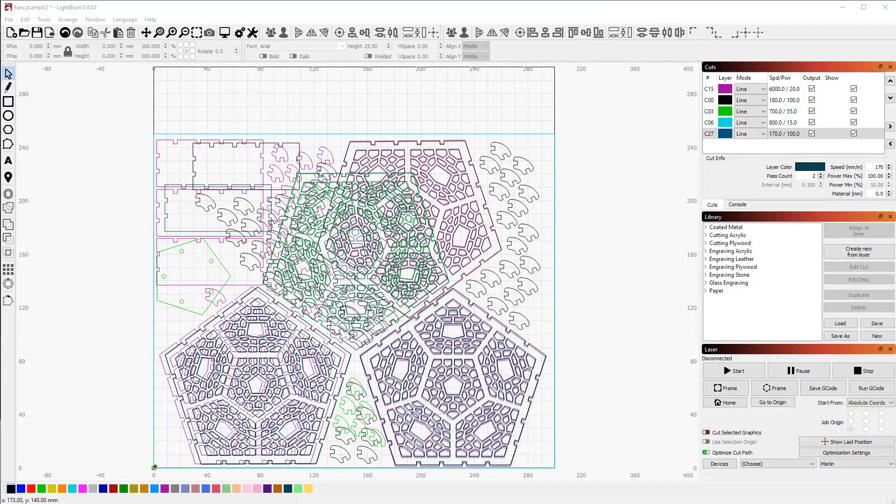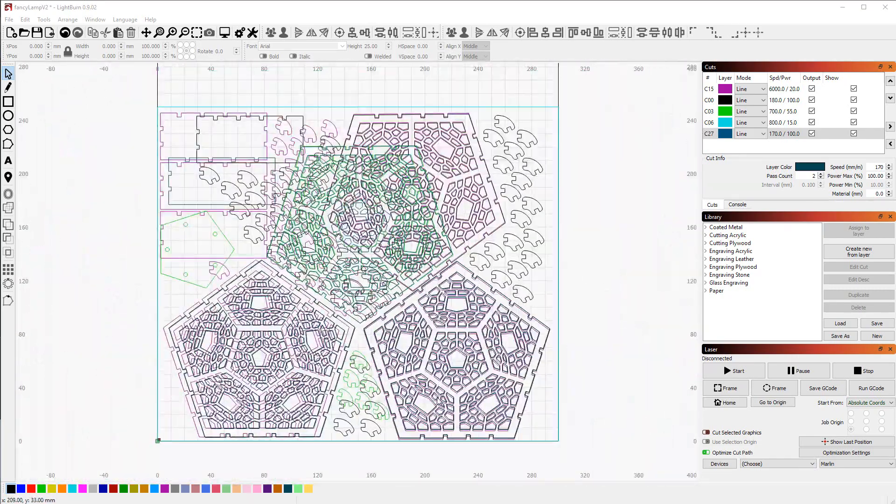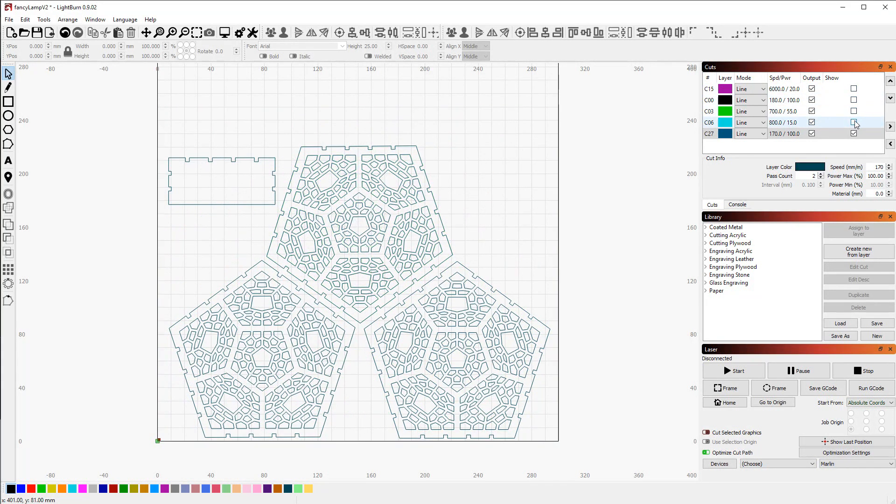So we are here in LightBurn, my preferred software for my CNC laser. You can see I have a whole bunch of different stuff going on here, and that's because it's on a whole bunch of different layers. I made separate layers for all the different versions I did for the different sheets of plywood to keep it organized.